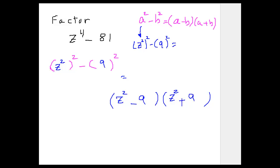It looks like I can factor this again. This is a difference of squares, so that would be (z - 3)(z + 3). And then this is prime. If it's a sum of squares, you cannot factor that. So that's how you factor this one.